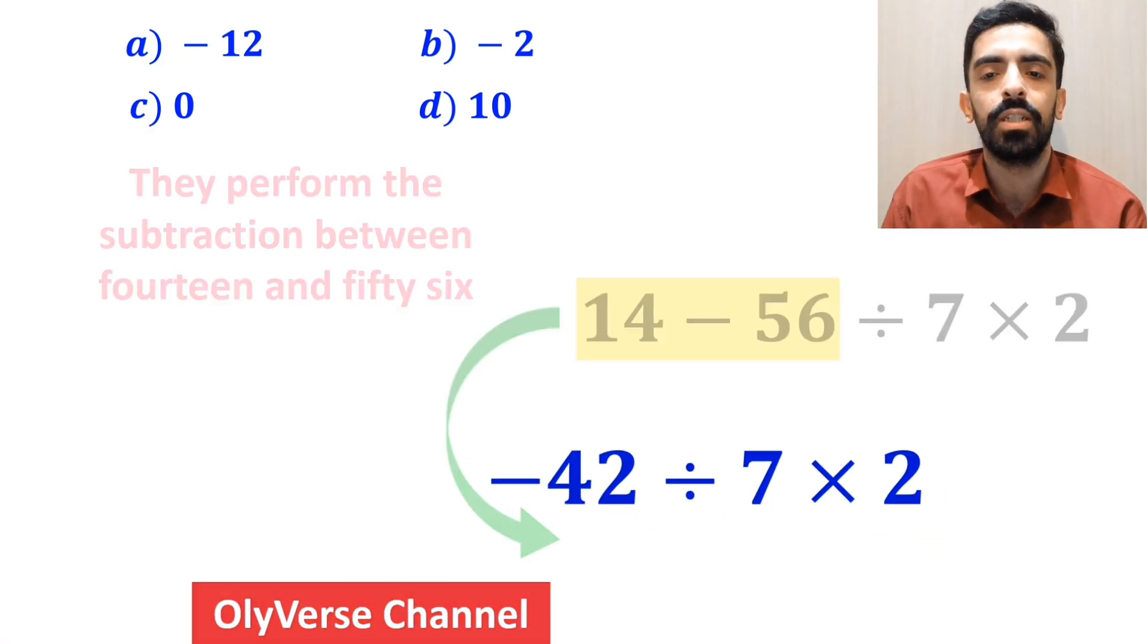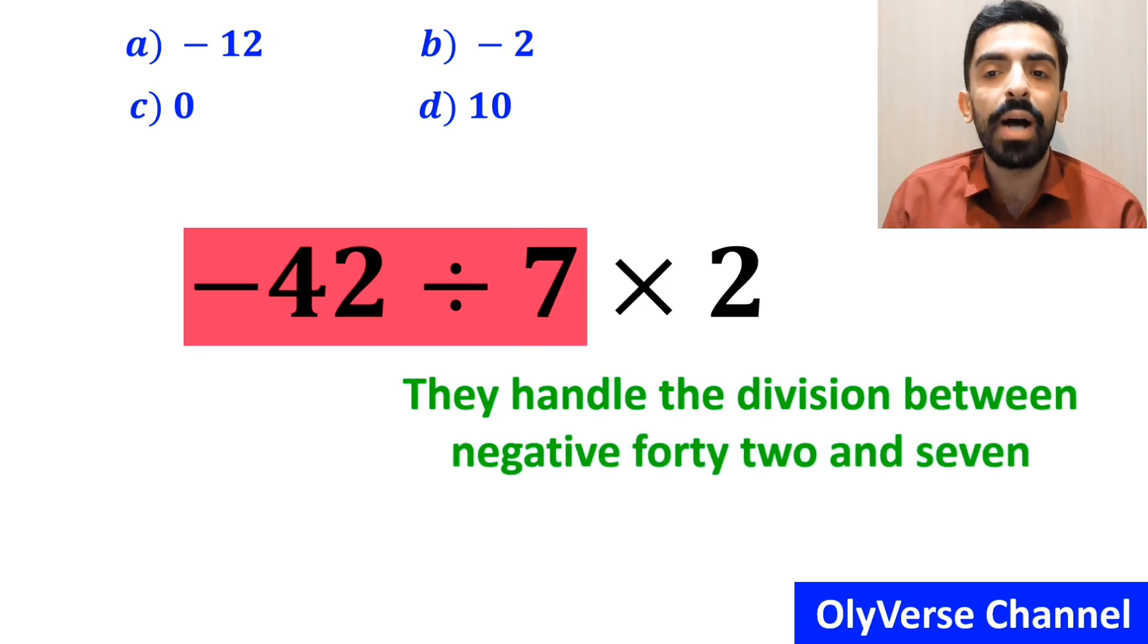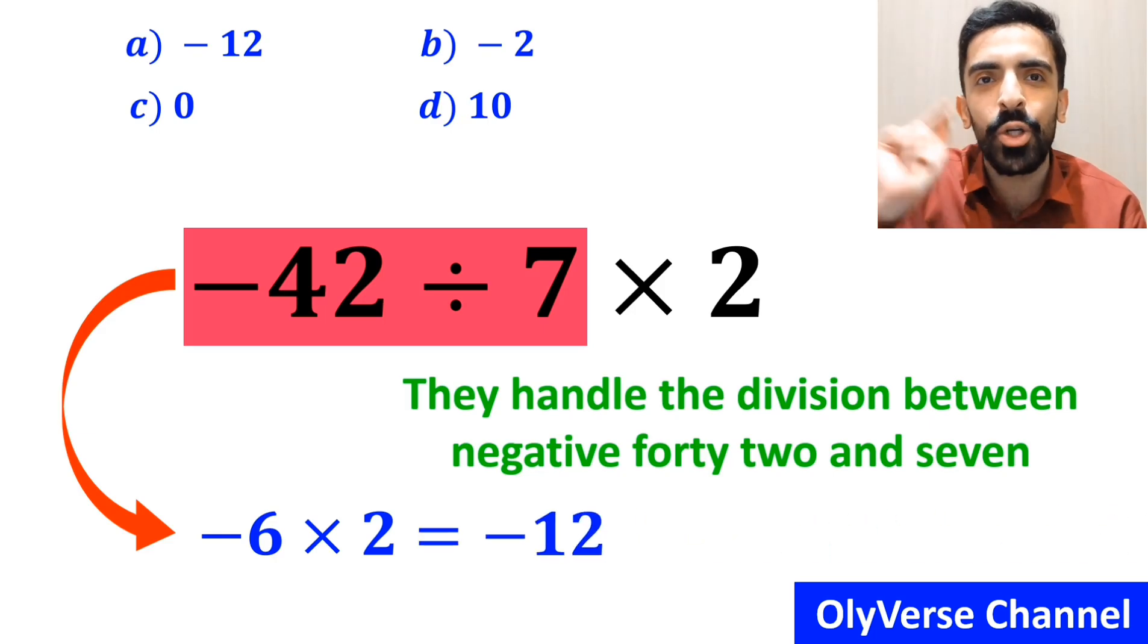In the final step, they handle the division between negative 42 and 7, and write this expression as negative 6, multiplied by 2, which eventually gives them the answer negative 12.